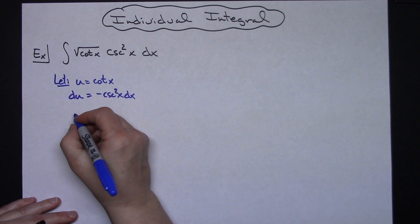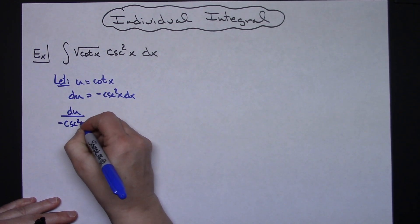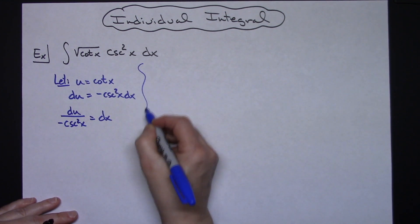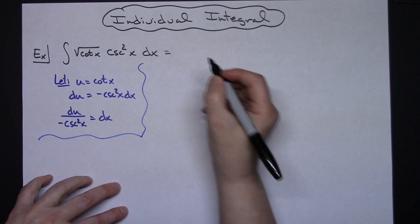If I go ahead and solve for dx I'll have du over a negative cosecant squared x is equal to dx. So we're going to do that u substitution right off the bat. Then we can come up to our original equation and do some substitutions.